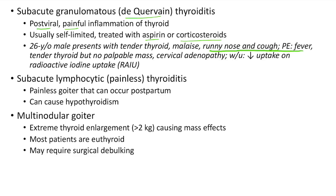Now let us see about subacute lymphocytic thyroiditis, also known as painless thyroiditis. It is a painless goiter that can occur postpartum and can lead to hypothyroidism. Now let us see about multinodular goiter. In this case there is extreme thyroid enlargement — sometimes the thyroid can weigh more than 2 kg — leading to various mass effects. Most patients with multinodular goiter are euthyroid. Multinodular goiter may require surgical debulking because of its mass effects.